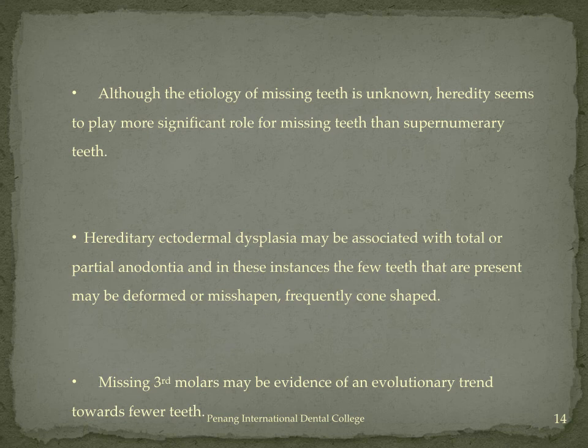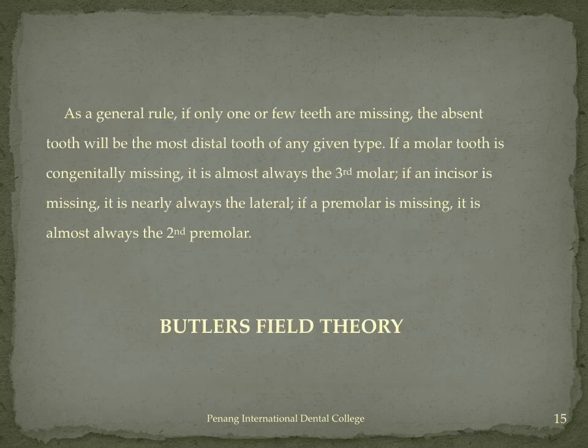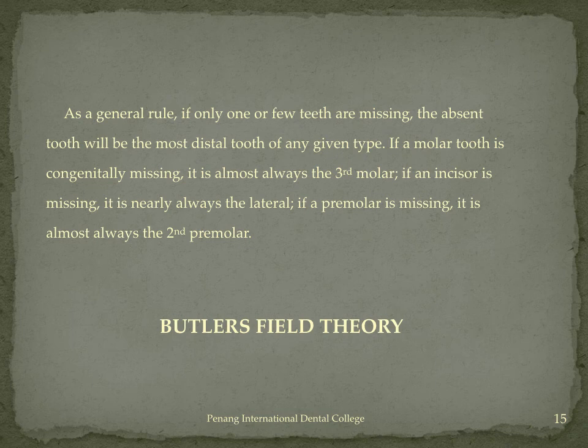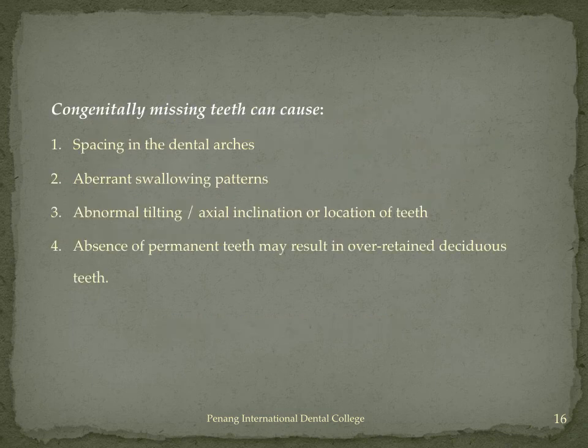As a general rule regarding which tooth should be missing, in each tooth type it is the distal variant that will normally be missing. Among incisors, the lateral incisor is more commonly missing; among premolars, the second premolar; among molars, the third molar. This is termed Butler's Field Theory — that in each field or tooth type, it is always the distal tooth which has a higher chance of being missing.